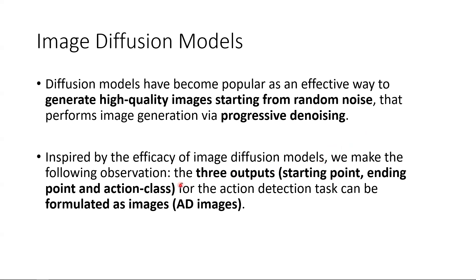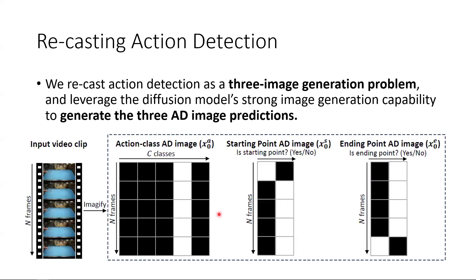The three outputs — the starting point, ending point, and action class outputs for the action detection task — can be formulated as images, which we call AD images. This allows us to tackle action detection from a new perspective by recasting it as a three-image generation problem, where we are required to generate starting point, ending point, and action class predictions as images.